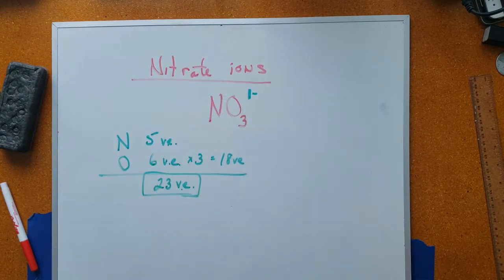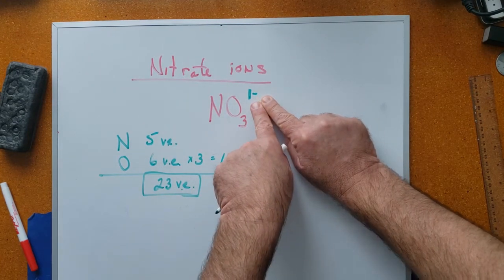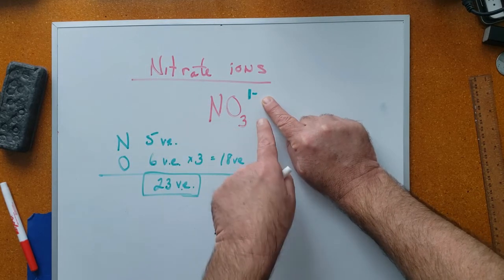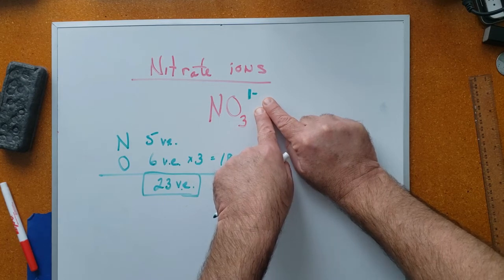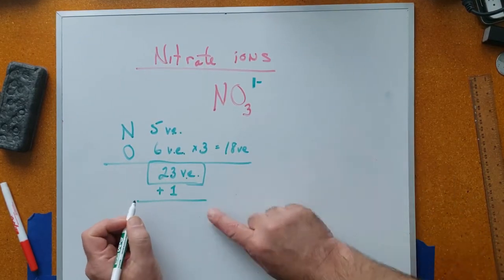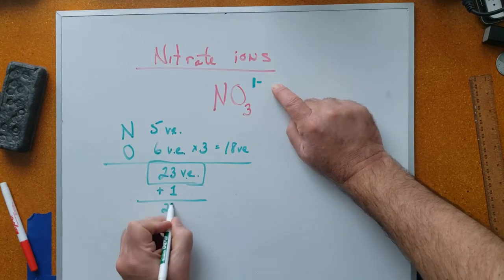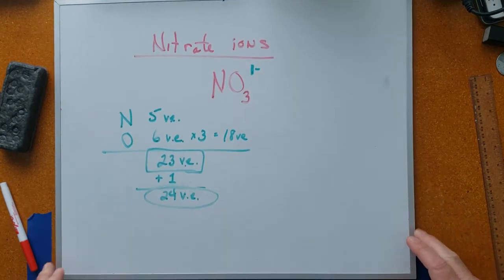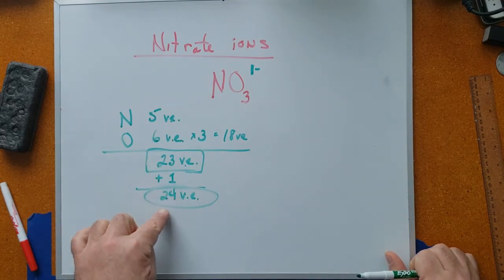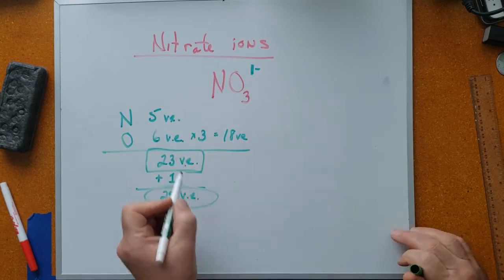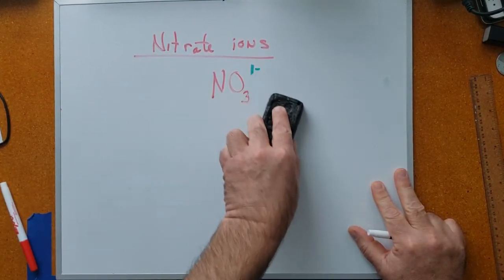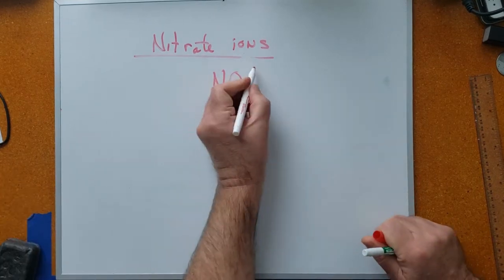Here is where we take into account that this is an ion — a negative one ion. Anything gains a charge of negative one by adding an electron to itself. A negative one ion means the total number of valence electrons must be increased by one. So for the nitrate ion, we don't use 23 valence electrons in our drawing but 24 — that extra one is due to the negative one charge on the ion.